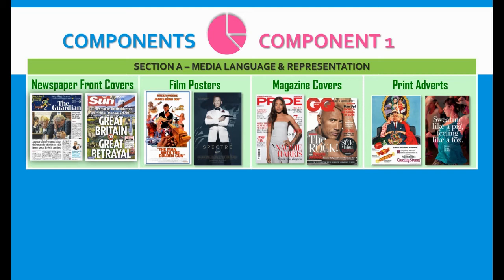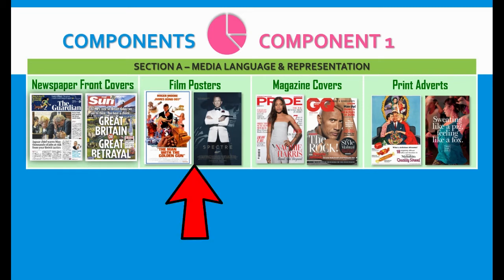It's very much what you've been doing since year seven. We will be studying the front covers of two different newspapers, The Guardian and The Sun, both focusing on Brexit. We will also be studying two film posters from the James Bond series — one from many years ago, The Man with the Golden Gun, and one from 2015, Spectre.